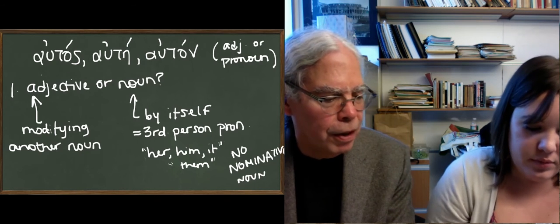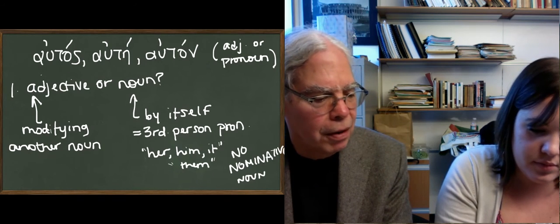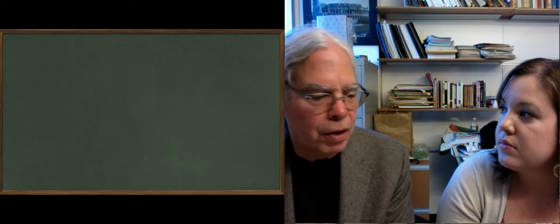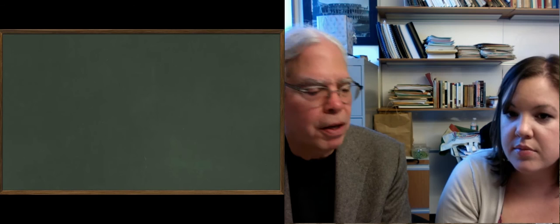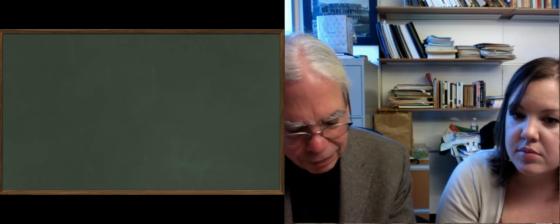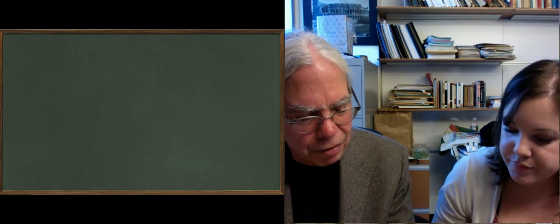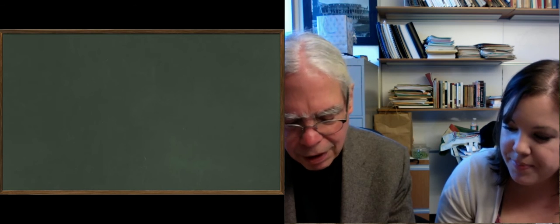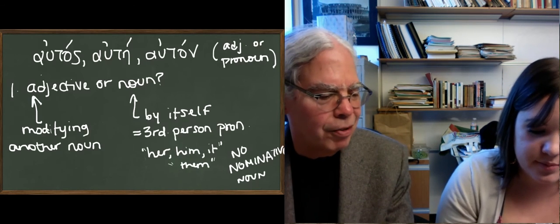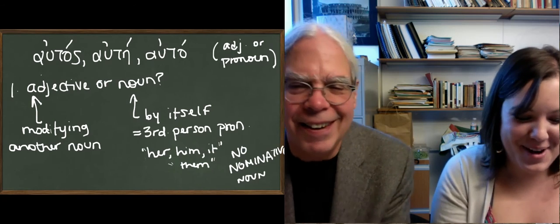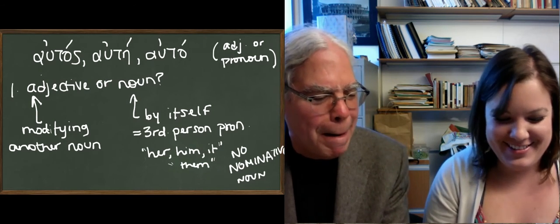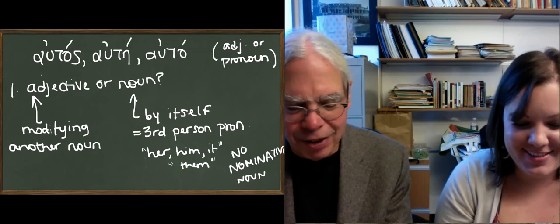Now let's switch to when it's an adjective. By the way, though, the forms of autos out there, auton, the adjectival categories are the same as agathos. It does have auton. It's not auton. It's auton. Let's fix that. It never happened.